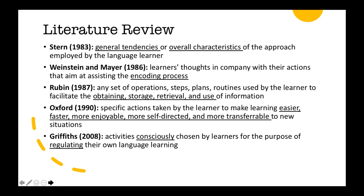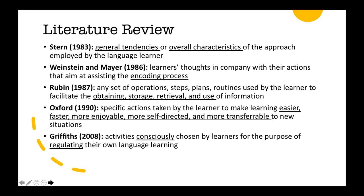Rubin and Oxford provide more details about the possible outcomes of employing strategies, such as better storage of new information and easier, faster, or more enjoyable learning. Griffiths pays attention to consciousness as one of the requirements to call an activity a strategy. It is also necessary to see the difference between style and strategy: styles refer to habitual patterns of pursuing, processing, or reacting to information, categorized under sensory preferences, cognitive, and personality types. Strategies are observable forms of students' underlying learning styles.